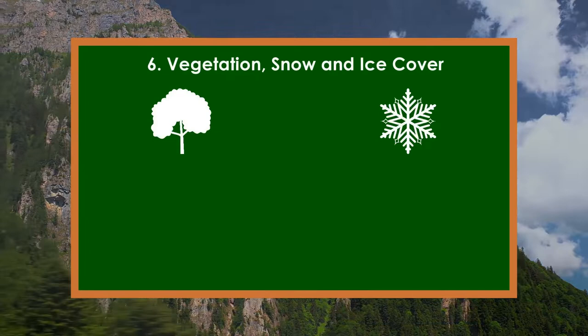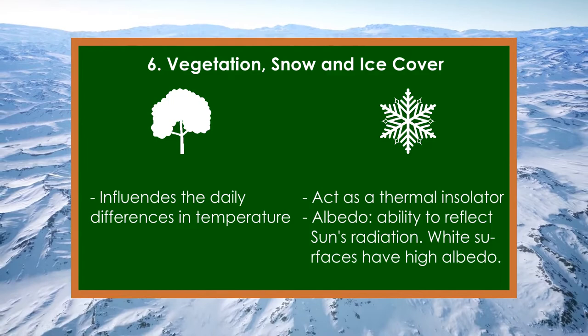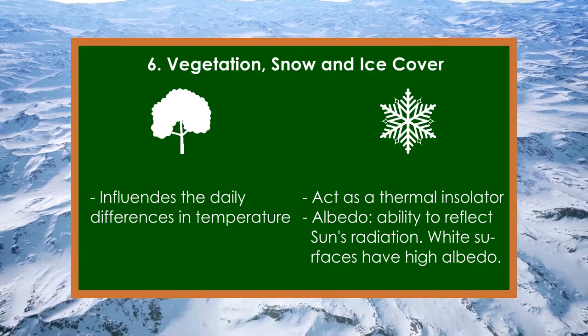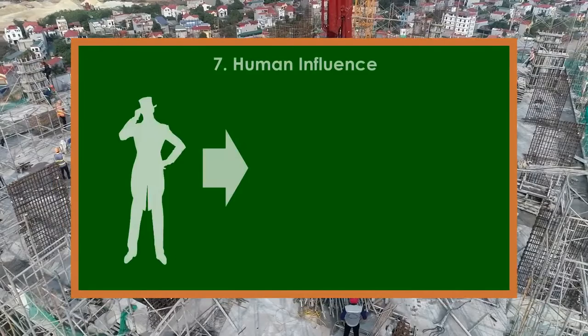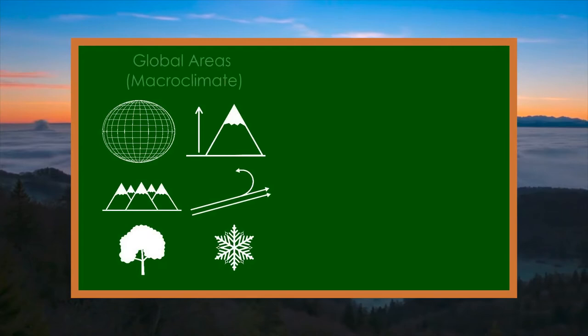Vegetation, by its type and age, influences the daily differences in temperature. Snow and ice cover act as thermal insulators by reducing heat radiation, and with their albedo they cause the reflection of solar radiation, which affects low air temperatures. Human influence can also change the climate through deforestation, building settlements and artificial lakes, releasing greenhouse gases, and so on. Some climate factors influence the global level, and some are more influential at the local level.